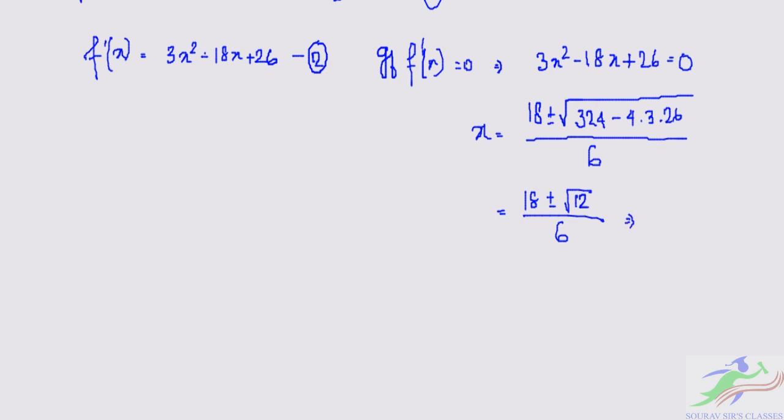Simplifying this, we have x=(9±√3)/3. So we have two values of x: x=(9+√3)/3 and x=(9-√3)/3.